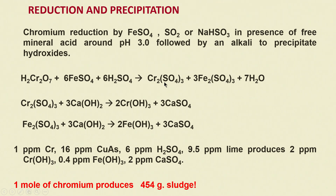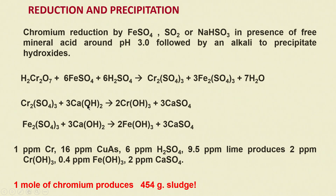This produces chromic sulphate and ferric sulphate along with water. The Cr₂(SO₄)₃ can then react with lime, producing chromium hydroxide and 3 moles of calcium sulphate. Calcium sulphate is an exchange product, but chromium hydroxide will precipitate out.